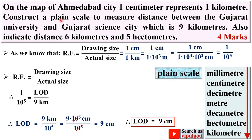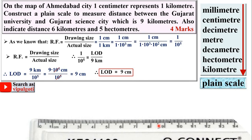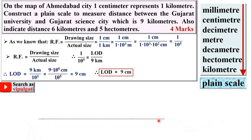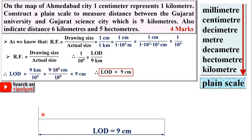Now we can start the plane scale. The length of drawing is 9 centimeters, so draw a horizontal line of 9 centimeters. Write the dimension label: length of drawing equals 9 centimeters. Take the height of the scale as 1 centimeter and complete the rectangle. Divide the scale into 9 equal divisions, since the maximum distance is 9 kilometers, so each division represents 1 kilometer.